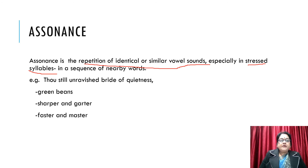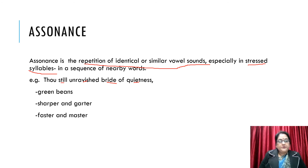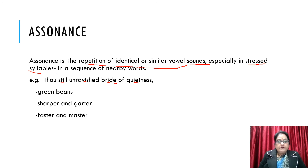Let's understand with examples. 'Thou still unravished bride of quietness.' These are the opening lines of Keats' poem 'Ode on a Grecian Urn.' Now let's see which vowel has been repeated here. We find that the 'I' sound has been repeated and stressed for a longer time: 'still,' 'unravished,' 'bride,' 'quiet' — all in stressed syllables. So this is assonance.